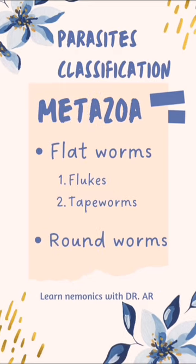The metozoa are further divided into flatworms, which are also known as platyhelminthes, and roundworms, which are known as nematohelminthes. The flatworms have further two classifications: the flukes, which are known as trematodes, and the tapeworms, which are known as cestodes.